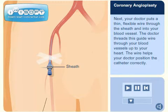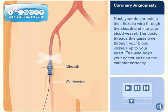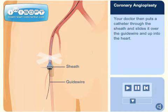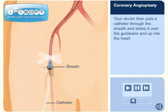Next, your doctor puts a thin, flexible wire through the sheath and into your blood vessel. The doctor threads this guide wire through your blood vessels up to your heart. The wire helps your doctor position the catheter correctly. Your doctor then puts a catheter through the sheath and slides it over the guide wire and up into the heart.